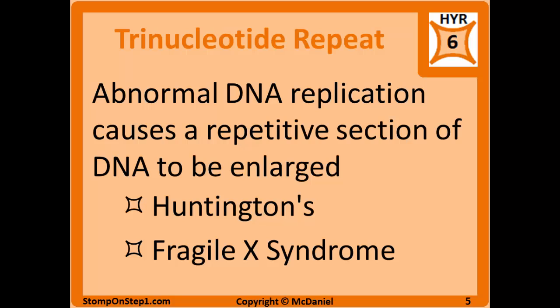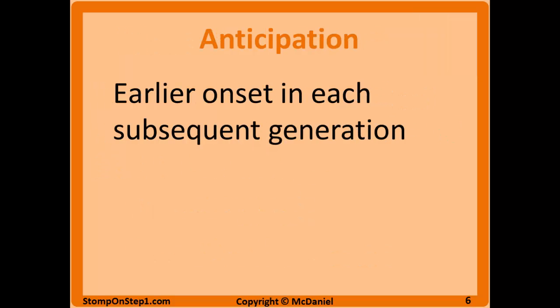The two highest yield examples of trinucleotide repeat expansion are Huntington's disease, which is a CAG repeat expansion, and Fragile X syndrome, which is a form of mental retardation with facial abnormalities. Anticipation is when disease has an earlier onset in each subsequent generation, most often seen in these trinucleotide repeat expansion diseases. This occurs because the number of repeats increases each generation — a high number of repeats increases the likelihood of replication errors, so the mutation itself causes further mutations.